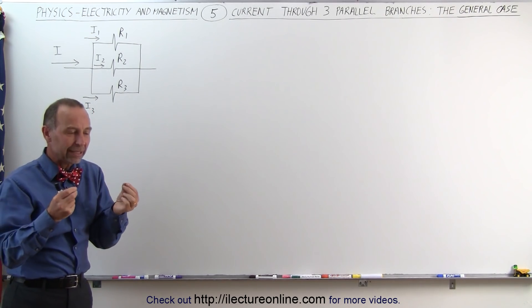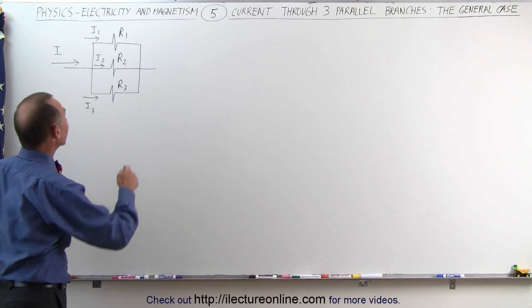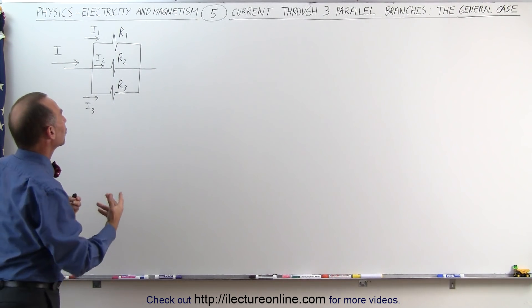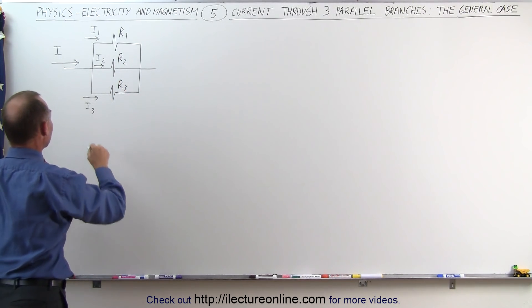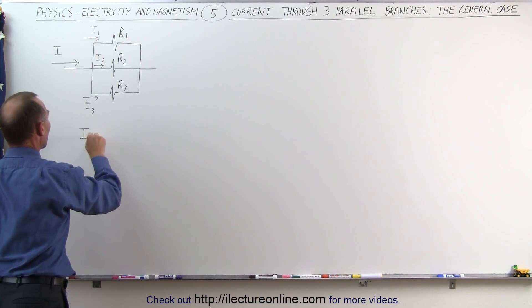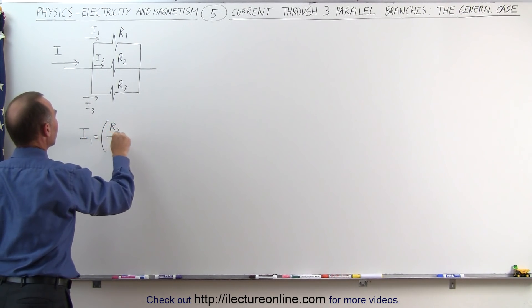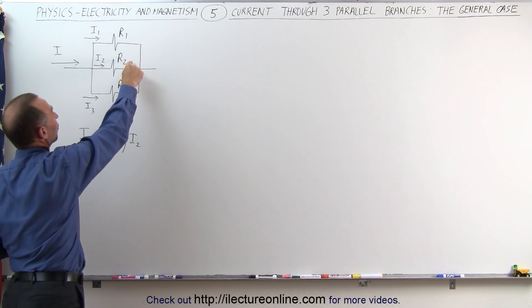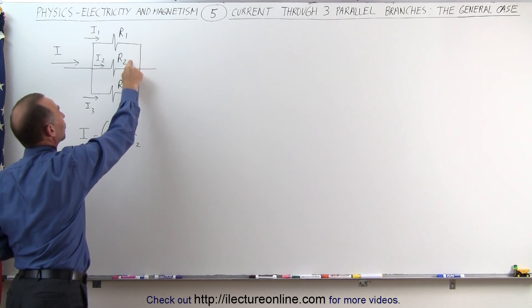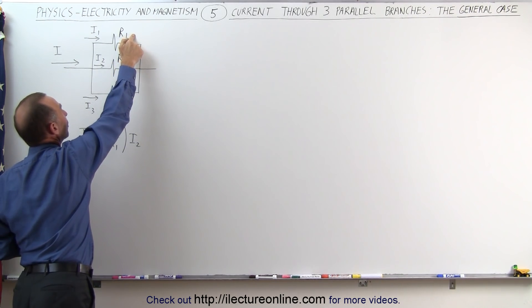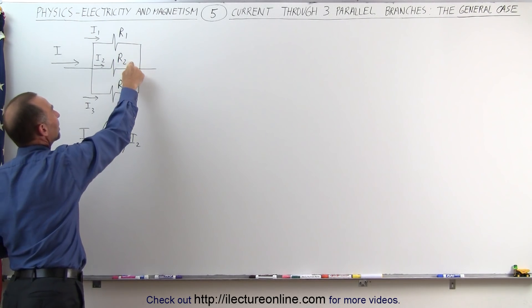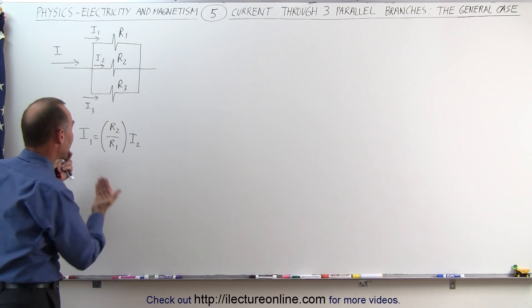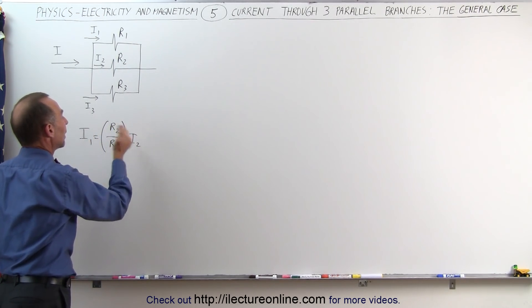From the previous video, we found that we can calculate the current through any one branch relative to another by the inverse of the relationship between the resistances. In other words, I1 equals the ratio R2 divided by R1 times I2. So if the resistance in R2 was twice R1, then the current through I1 would be twice the current through R2.